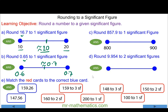The one significant figure is the eight, or 800. 857.9 is between 800 and 900, and it is closer to 900. The five does round up the eight to a nine, so it becomes approximately 900. Now for two significant figures, 9.954 is between 9.9 and 10.